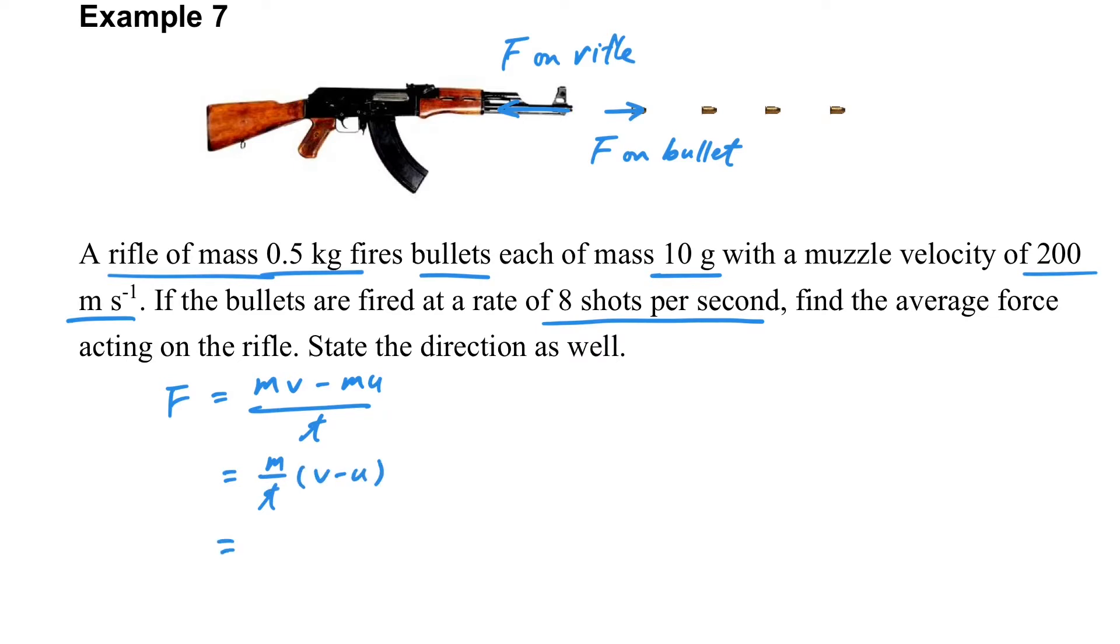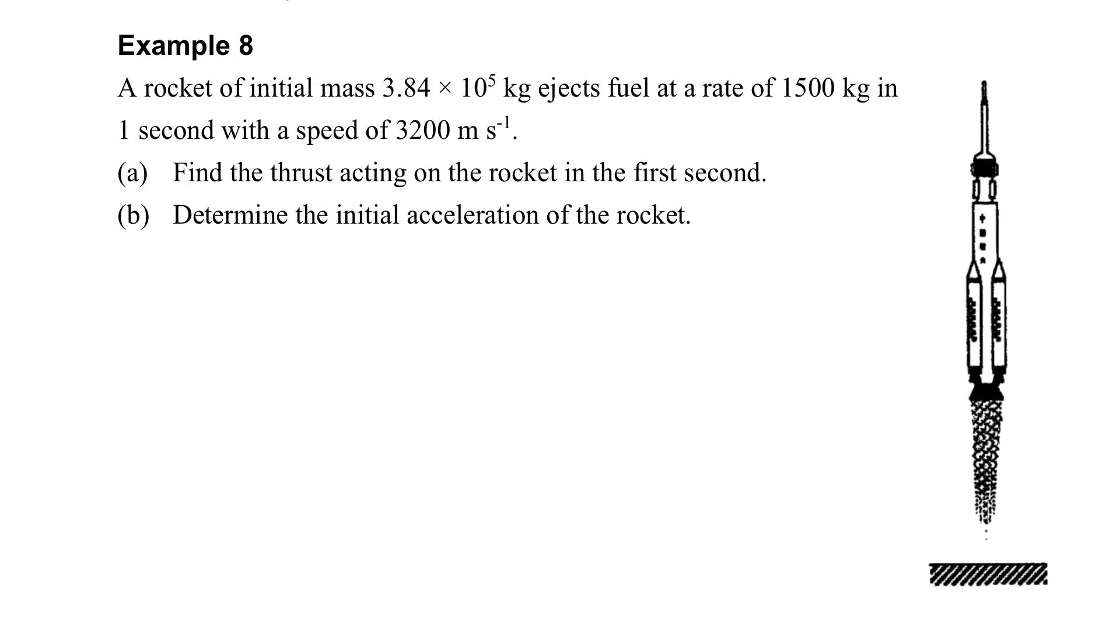Now, the equation here is referred to the bullet. When I talk about the bullet, 10g, we have to change it to kg. Because we have 8 shots of bullets coming out in 1 second, the m over t will be this value. And actually, this is the F on the bullet. But because there are action and reaction pair, the average force acting on the rifle is also the same value, but towards left.